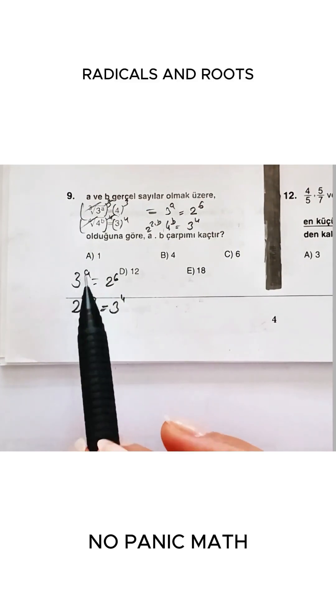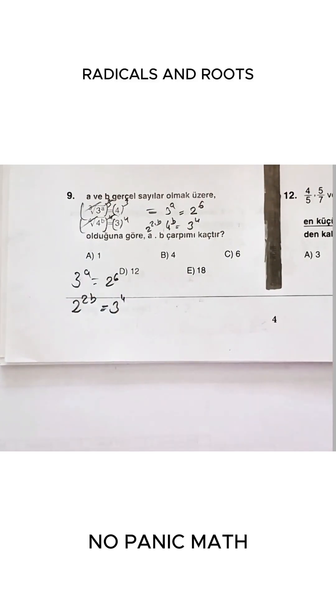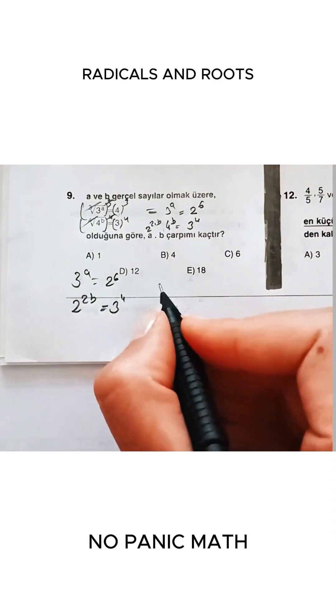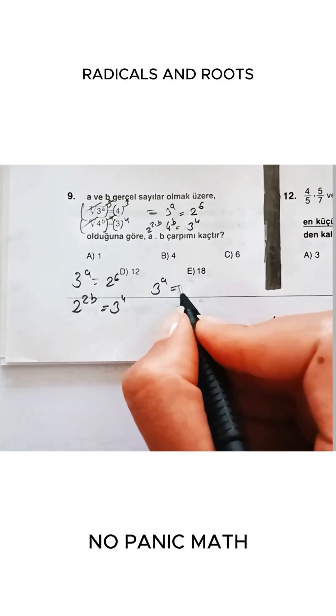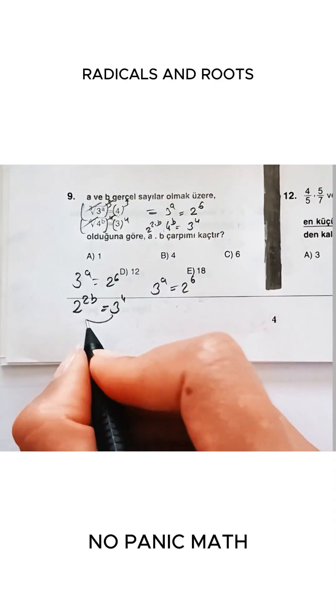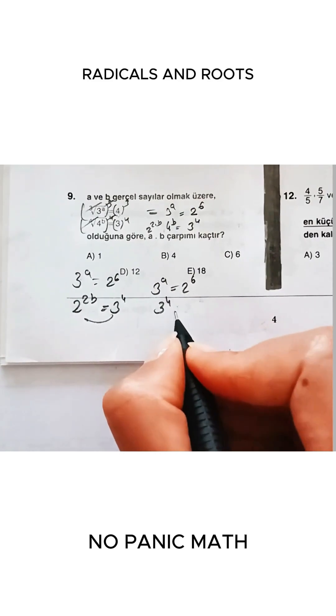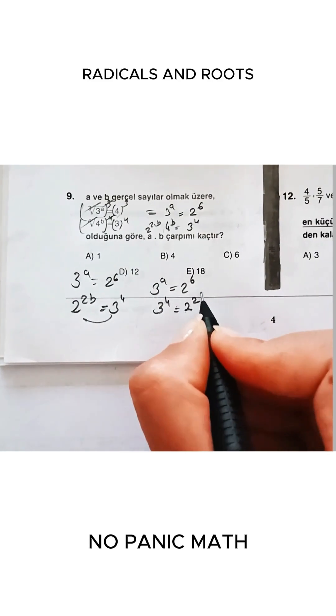Now look, three to the power of a can never be equal to two to the power of six, friends. Let's do it like this. Let's switch this expression around. You'll see now that nothing different will happen. Two to the power of six. If you swap these, three to the power of four equals two to the power of two b.